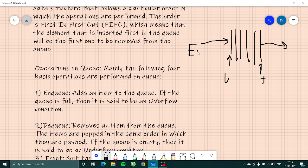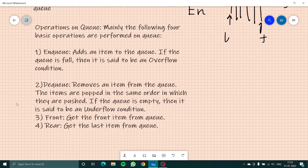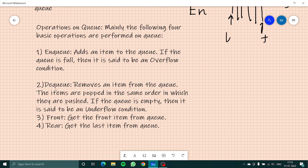Enqueue is always done at the end of the queue. Now there comes dequeue. Dequeue removes an item from the queue. The items are popped in the same order in which they are pushed.